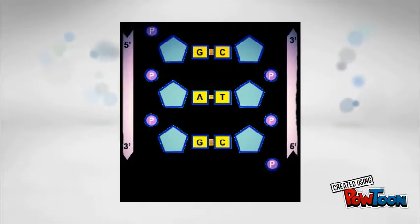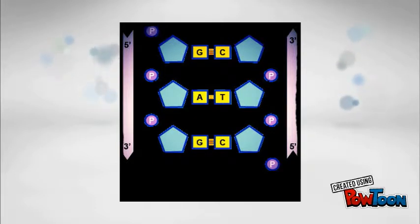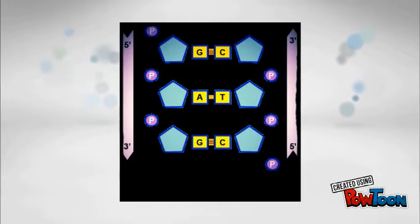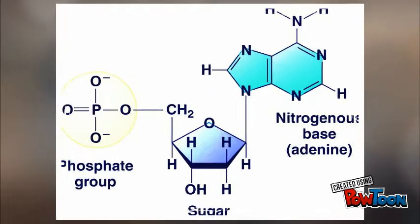DNA is in the shape of a double helix, which is a polymer. It is made of smaller molecular units called nucleotides. Each nucleotide is composed of phosphate, sugar, and one of the four nitrogenous bases: adenine, thymine, cytosine, and guanine.